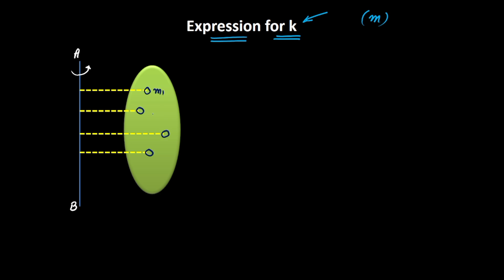Let us also assume that this system contains n masses — M1, M2, M3, and Mn — such that M1 is at distance R1 from the axis, M2 is at R2, M3 is at R3, and Mn is at distance Rn from the axis.